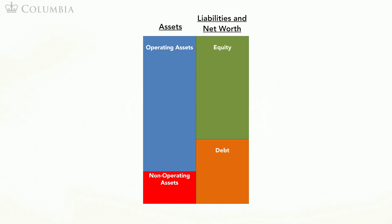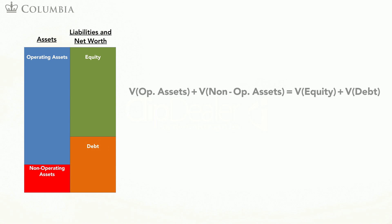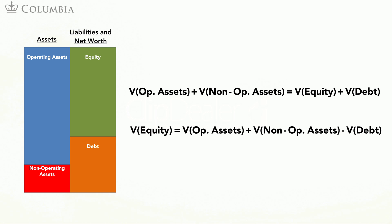Our market value balance sheet now looks like this. Since the two sides must equal, we have the following equation: the value of the operating assets plus the value of the non-operating assets must equal the value of debt plus the value of equity. If we are interested in the value of equity, we can solve this equation as follows: the value of equity equals the value of operating assets plus the value of non-operating assets minus debt.